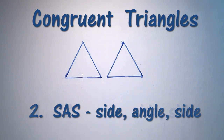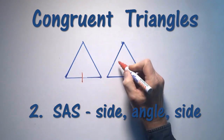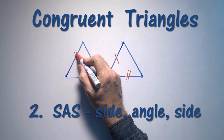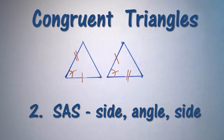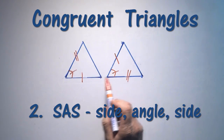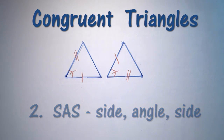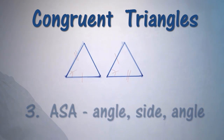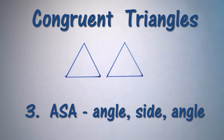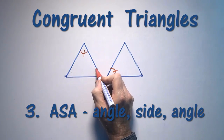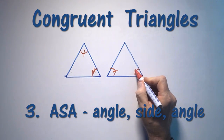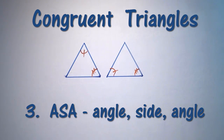The second is SAS — side, angle, side — that is, two equal sides and an included angle. Note the angle must be included. The third type is ASA — angle, side, angle — so we have an equal angle and another equal angle. Now the side must be included.